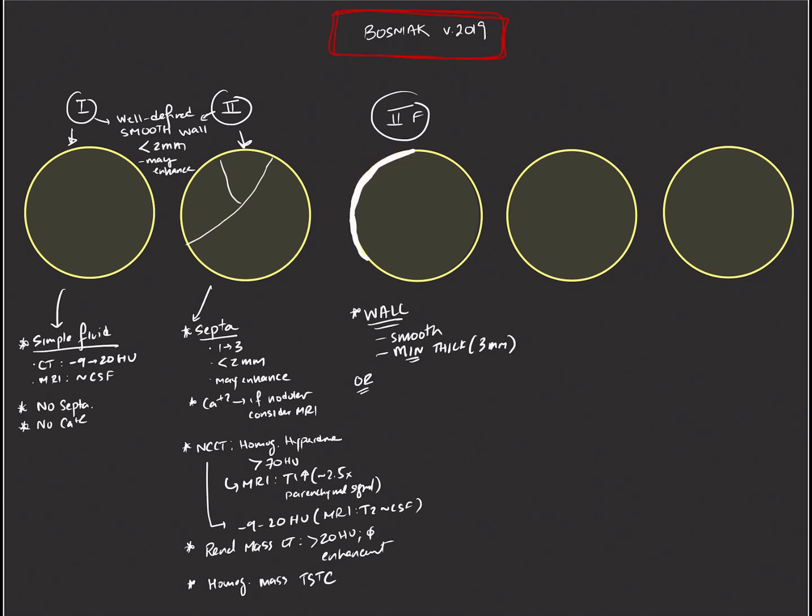Or we call something a Bosniak 2F if the septations are slightly thickened. Whereas Bosniak 2 septations are less than two millimeters in thickness, Bosniak 2F, if any of the septations that you see are more than three millimeters in thickness, we think about a Bosniak 2F lesion. Another caveat for Bosniak 2F lesions is if you see a mass with multiple septations, and we're talking about greater than or equal to four septations, and each of which are thin, we're also going to consider this lesion a Bosniak 2F lesion.